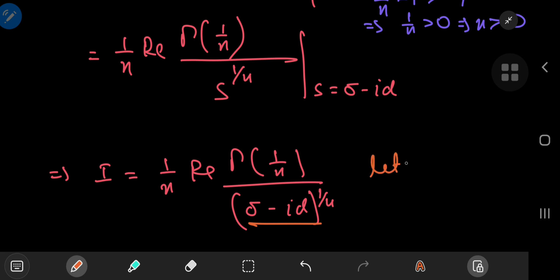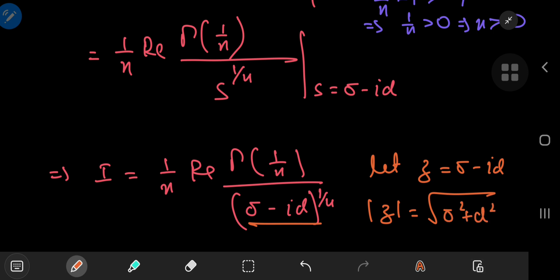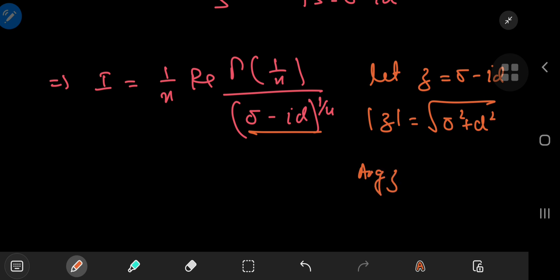So let z equal sigma minus i times alpha. And for the polar representation, we need the modulus of z, which is the square root of sigma squared plus alpha squared. And we also need the argument of z, which is the inverse tangent of the imaginary part alpha divided by the real part sigma. Now remember back in the start of the video, I said that sigma and alpha are both positive real numbers. So that means that this complex number z falls in the second quadrant of the complex plane. So in order to get the argument of this complex number, you have to take pi and subtract from this, this inverse tangent.